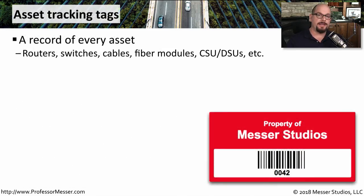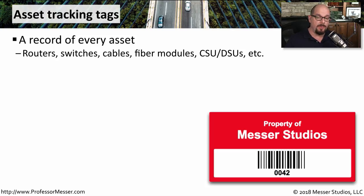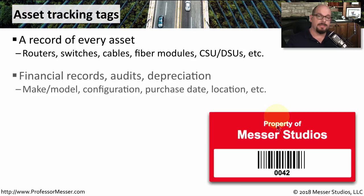Another physical security technique used by many organizations is to put the company's own asset tag on the different components. So if you have routers, switches, servers, or any other component, you can associate that particular component with an internal tracking number that's specific to your organization. This asset tag will then be associated with that particular device.